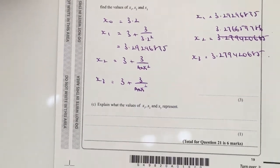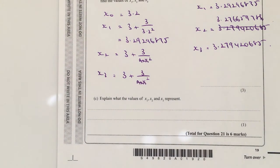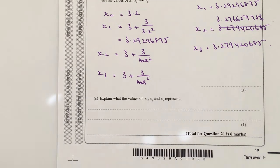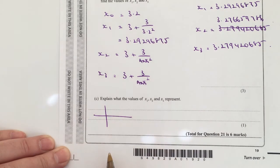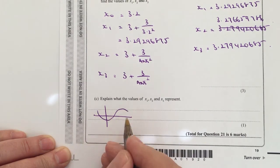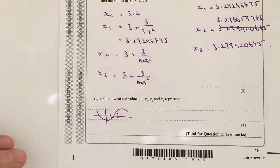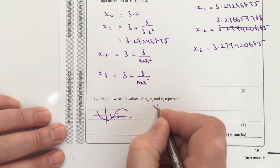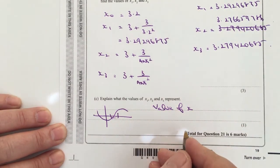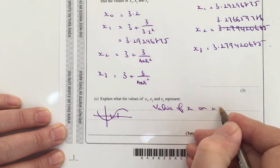Okay, and then the final little bit of it is explain what these values represent. Well basically, the value of iteration is getting this value closer and closer. So there's actually a cubic graph, it goes something like that, so it's getting closer and closer and closer to the value of x. Okay, so on a cubic graph.